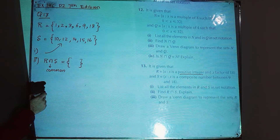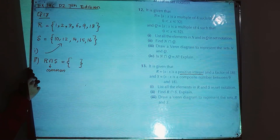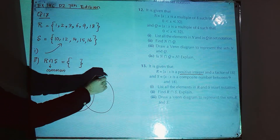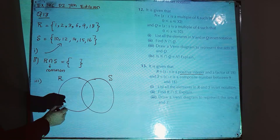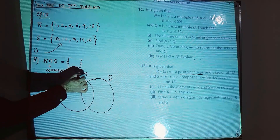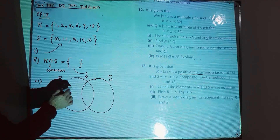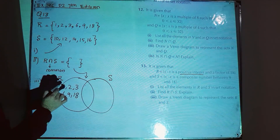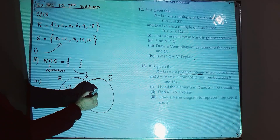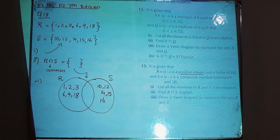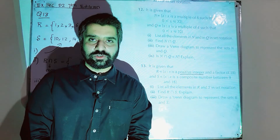Part 3: draw a Venn diagram to represent sets R and S. Draw 2 circles, one for R and one for S. Since there are no common elements, the overlapping region is empty. Elements of R — 1, 2, 3, 6, 9, 18 — are written in the R circle, and elements of S — 10, 12, 14, 15, 16 — are written in the S circle. This is the solution for question 13. I will upload the next questions in my next video — thank you.